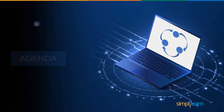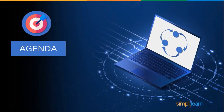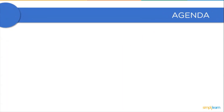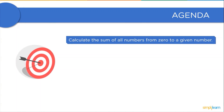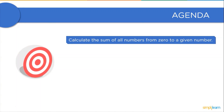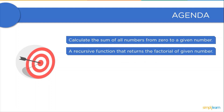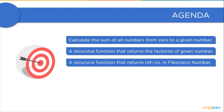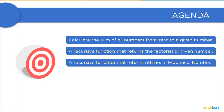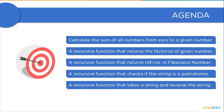In this session, we will discuss some of the commonly used recursion problems asked in interviews. We shall begin with calculating the sum of numbers from 0 to a given number. Then we will discuss a recursive function that returns the factorial of a given number. After that, we will look at a recursive function that returns the nth Fibonacci number. Then we will examine a recursive function that checks if a string is a palindrome. Finally, we will discuss a recursive function that can reverse a given string.